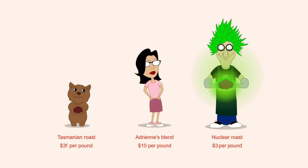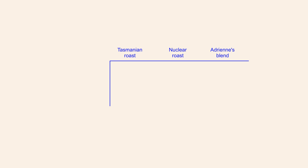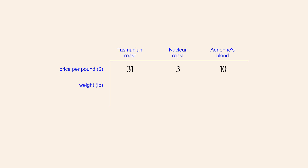As we saw in the previous chapters, this problem can be organized by creating a table. In the first row of the table, we will list the price per pound of each coffee. We know that the Tasmanian coffee costs $31 per pound, the White Sands nuclear roast costs $3 per pound, and the blend we wish to create must cost $10 per pound. In the second row, we list the weight of each coffee to mix to create one pound of coffee blend, which costs $10.